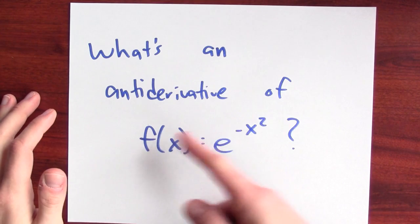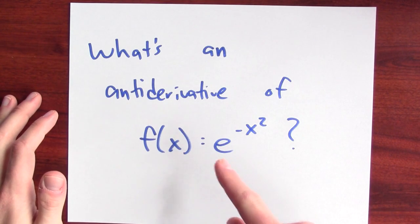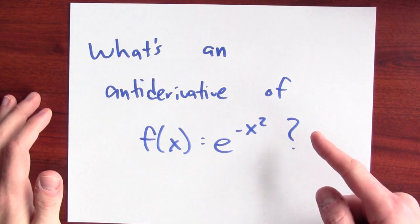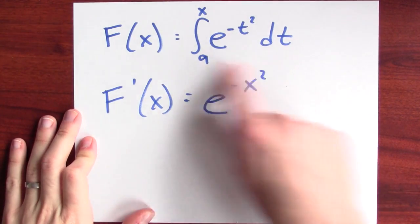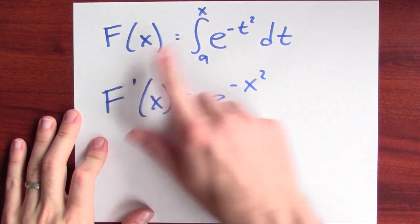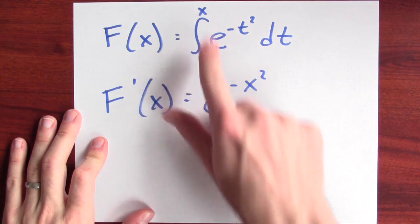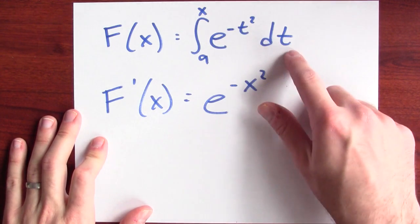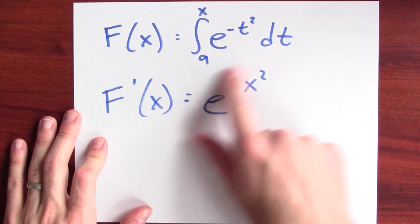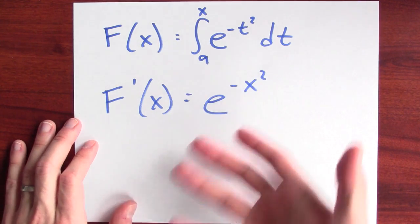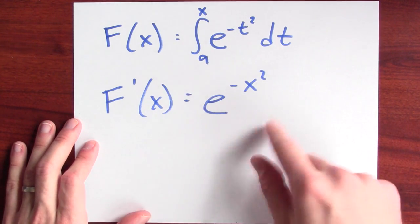For instance, you might be wondering, what's an antiderivative of this function, little f(x) equals e to the negative x squared? Well, if a function's continuous, then we can find an antiderivative. The antiderivative is the accumulation function. So an antiderivative of e to the negative x squared is the accumulation function. I can define a function, big F(x), to be the integral from a to x, for some number a, of e to the negative t squared dt. And if I differentiate this accumulation function, I get back e to the negative x squared. So I found an antiderivative for this function.